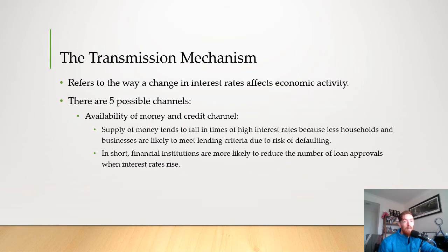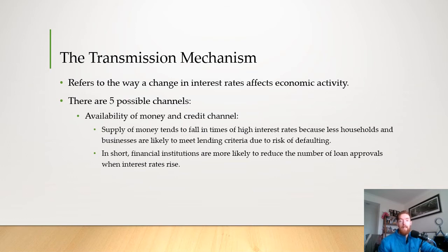Then we have the availability of money and credit channel. The supply of money tends to fall in times of high interest rates because fewer households and businesses are likely to meet lending criteria due to the risk of defaulting. In short, financial institutions are more likely to reduce the number of loan approvals when interest rates rise. In Australia, we have a very high household indebtedness ratio, meaning people often owe more than they have, so if interest rates rise, many people can't pay back their loans, which creates issues for the banks.